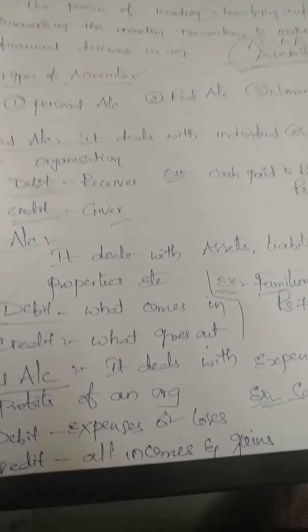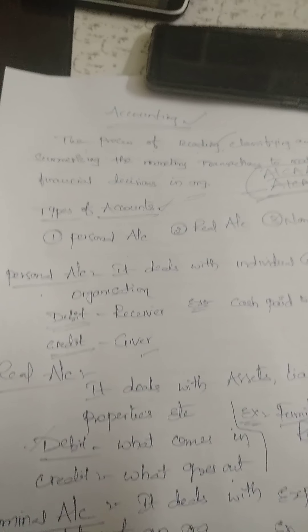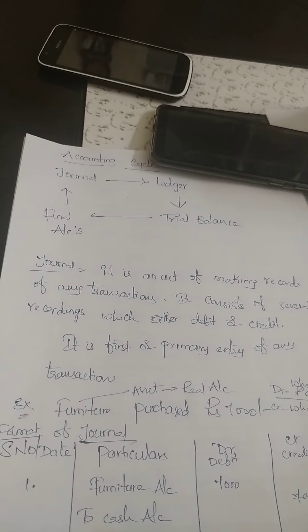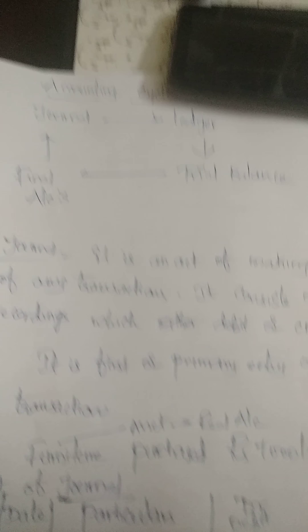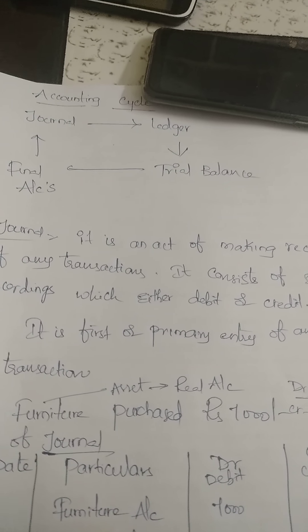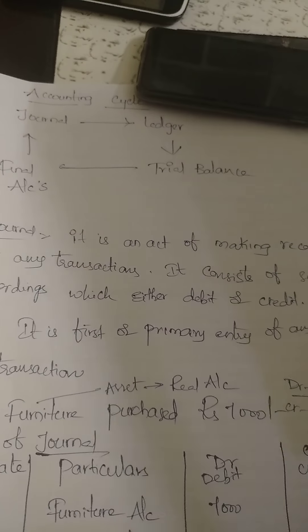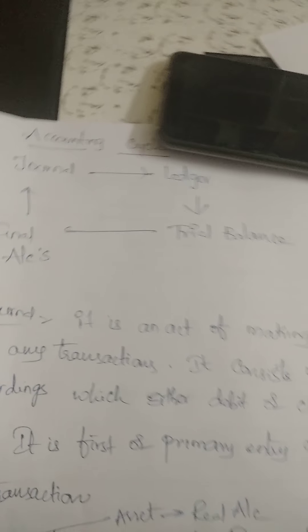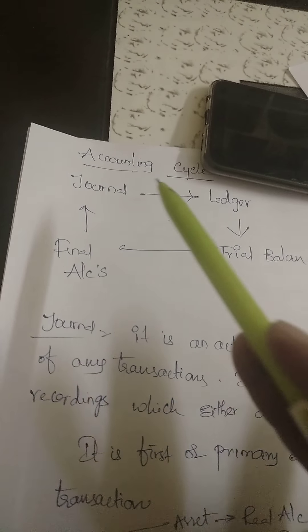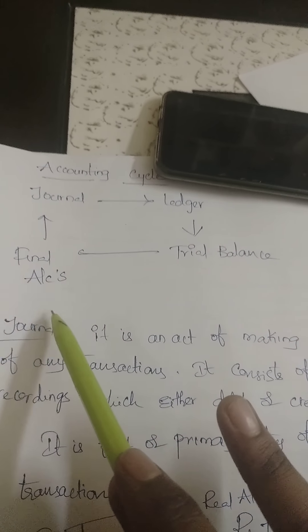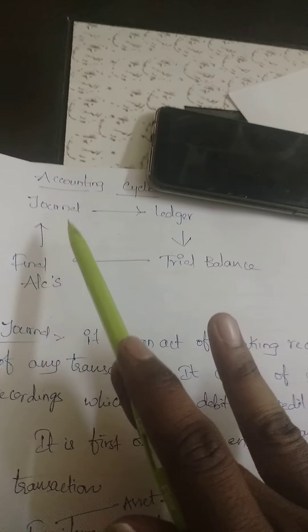Now, how to record and classify transactions will be discussed. The accounting cycle, according to the definition given by the American Institute of Chartered Accountants, is identifying, classifying, and summarizing monetary transactions done by companies. According to the accounting cycle, first the company prepares the journal, then the ledger, trial balance, and final accounts. The journal is the first recording done by the company after making a transaction.